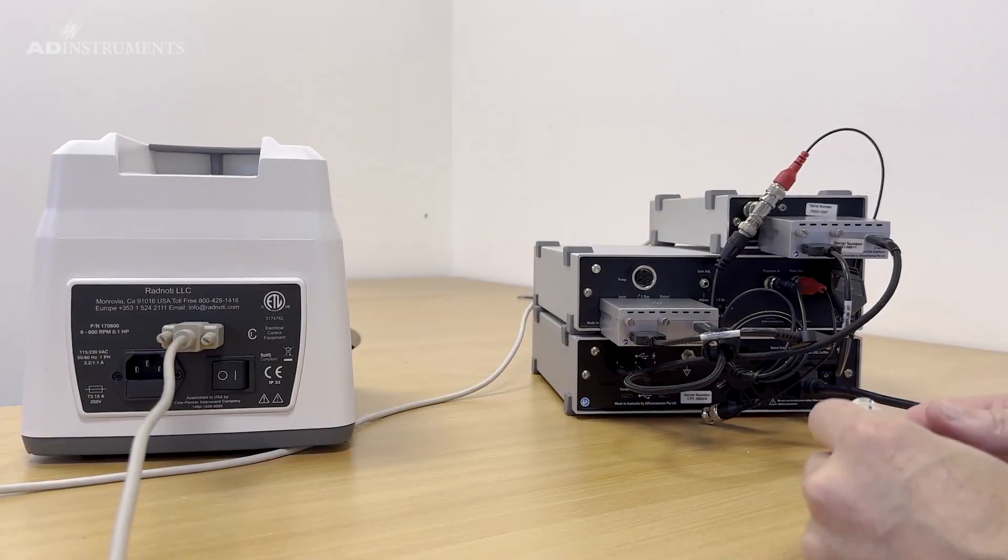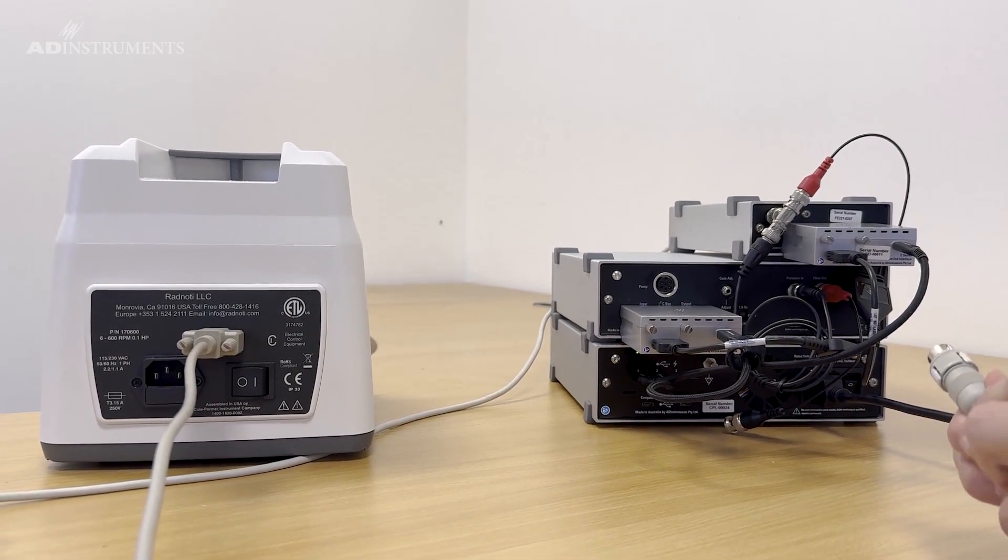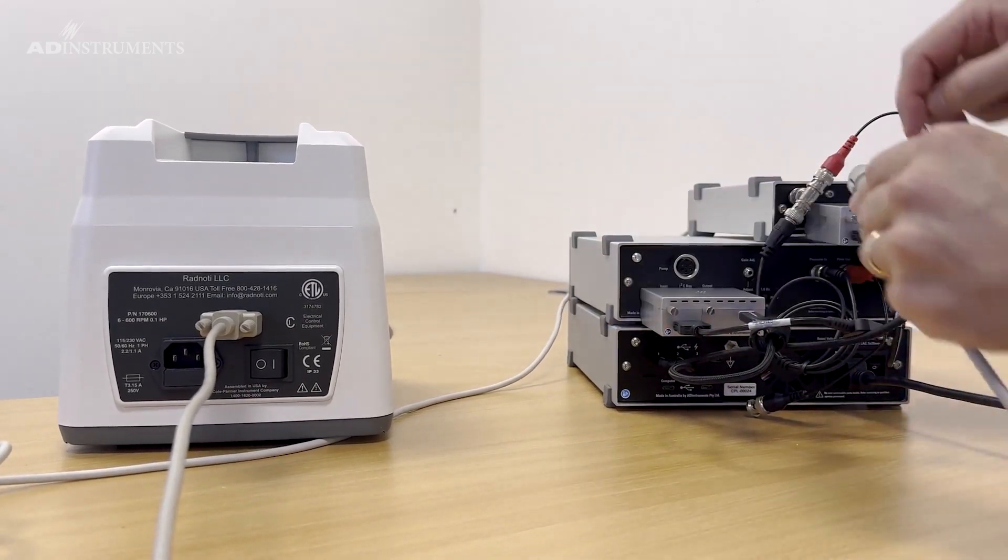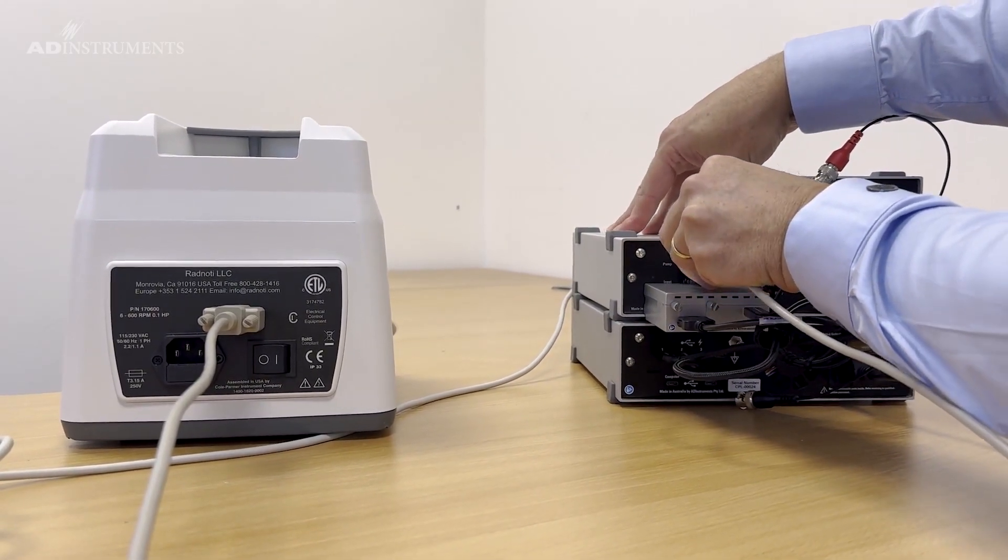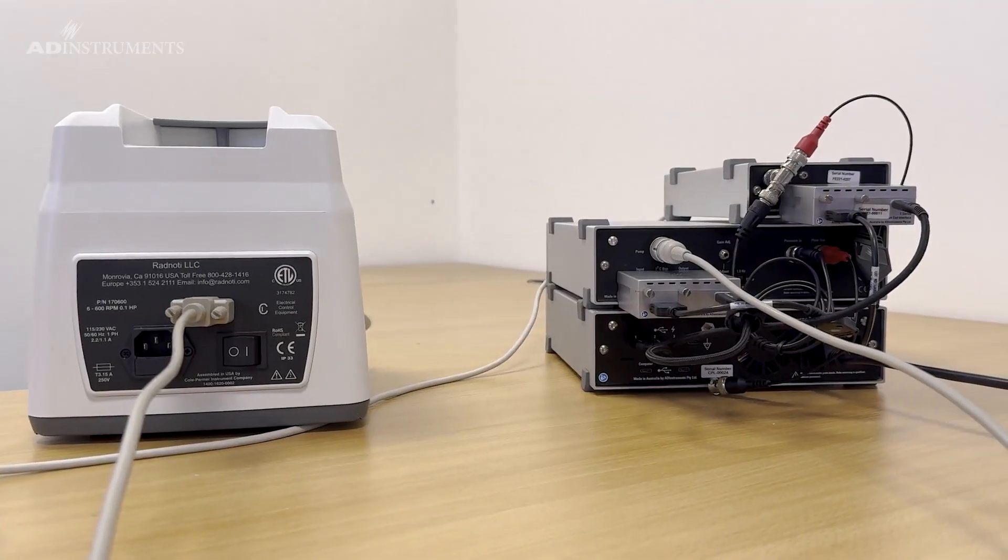Once the setup is complete all we need to do is connect the peristaltic pump to the STH pump controller. We use the supplied interface cable from the pump to the STH pump controller. Now the system is ready for priming.